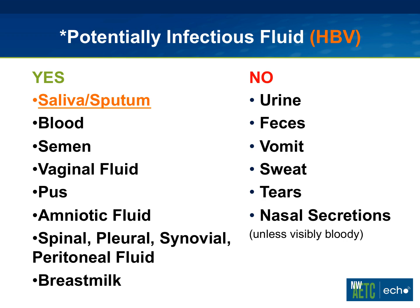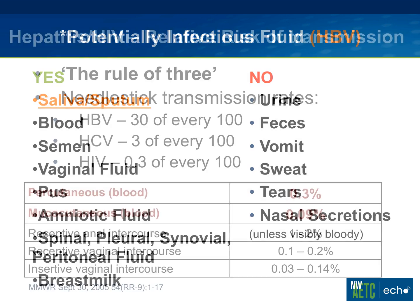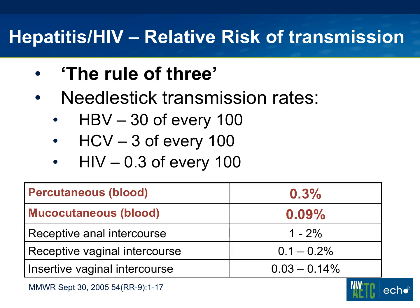For hepatitis B, one important distinction is that saliva and sputum are actually known to be infectious for hepatitis B. If you look at hepatitis B epidemiology throughout the world, there's probably a lot of horizontal transmission happening between children in Southeast Asia and Africa involving saliva and sputum.